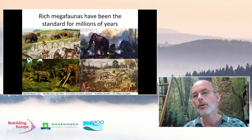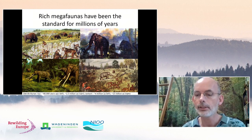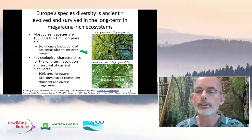Whether the climate was cold or warm, moist or dry, there were always very rich megafaunas for millions and millions of years. This is not just of historical interest — our current species are super old. Most of the species we have around us are hundreds of thousands to millions of years old, and their evolutionary adaptations are often even older. For example, the European beech has existed for several millions of years. An American beech has the same ecological requirements and same adaptations — a shade-giving, competitive tree adapted to mild temperate climates. These two diverged about 10 million years ago.